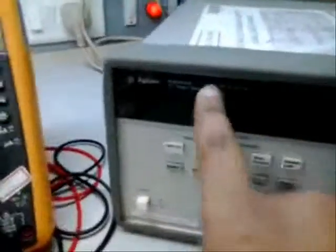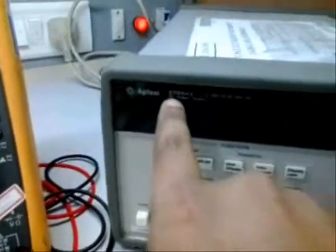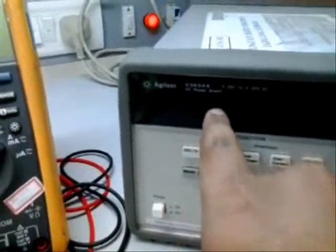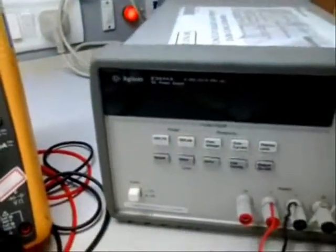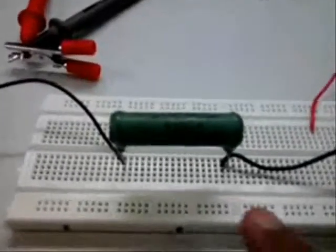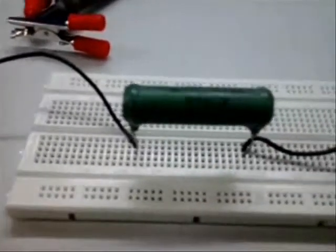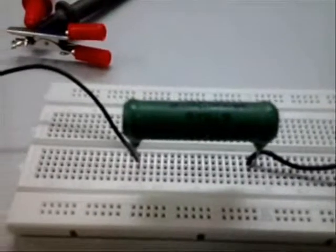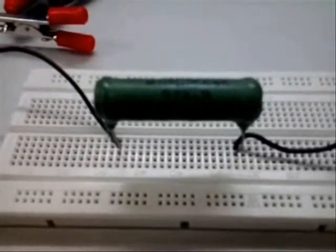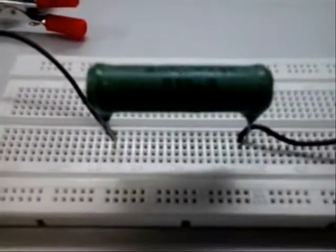We are using an Agilent E3634A DC power supply for our experiment. We are using a resistance which has a 10 Watt rating. This is a high power resistance for our experiment.